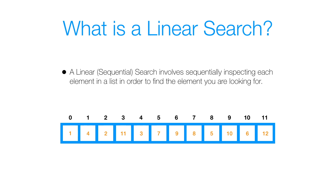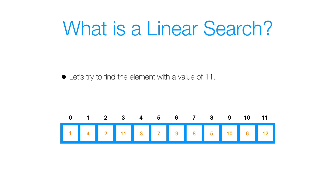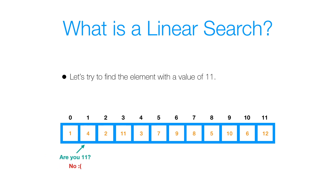Let's take this array as an example and try to find the element with data 11. We inspect the first element — are you 11? No. The next element — are you 11? No. The next — are you 11? No. The next — are you 11? Yes. We successfully performed a linear search and found the element with the data 11.